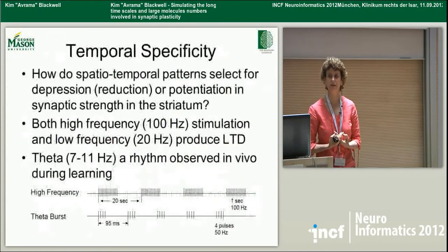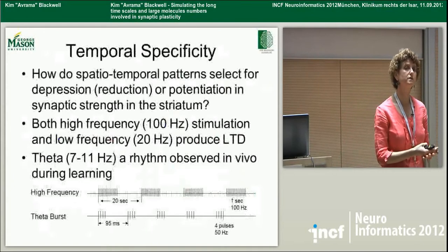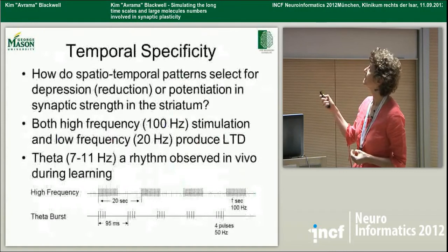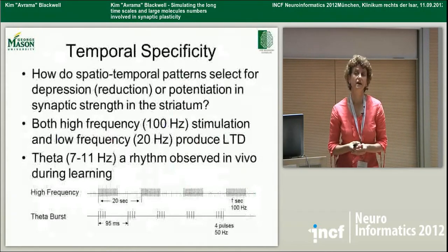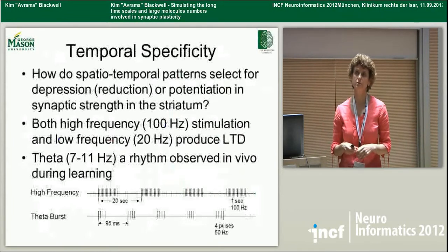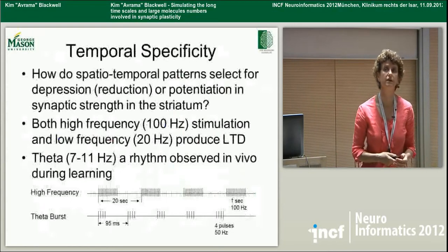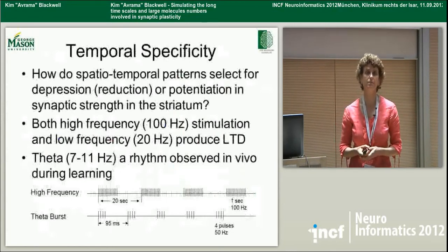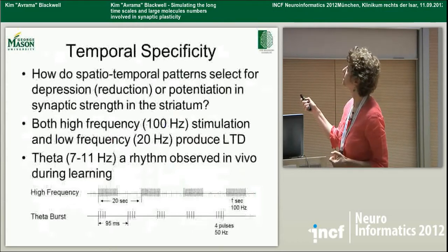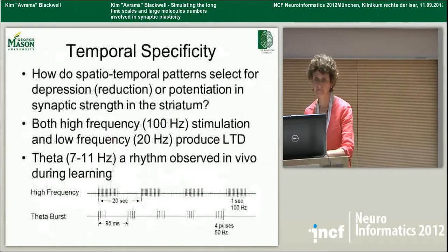We want to answer first how temporal patterns select for either depression or potentiation of synaptic strength. Now I'm switching to the striatum, not the hippocampus. Unlike the hippocampus, in the striatum both high-frequency and low-frequency stimulation produces long-term depression, and it's very difficult to produce potentiation in the striatum in the presence of a normal amount of magnesium. What is observed in the striatum, as well as other brain regions, is a theta frequency of activity in vivo that gets stronger during learning. So one possibility is that a theta burst stimulation would produce potentiation, because that's actually what's happening in the brain. An example of a theta burst: we give four pulses, wait a little bit, then give four more pulses.